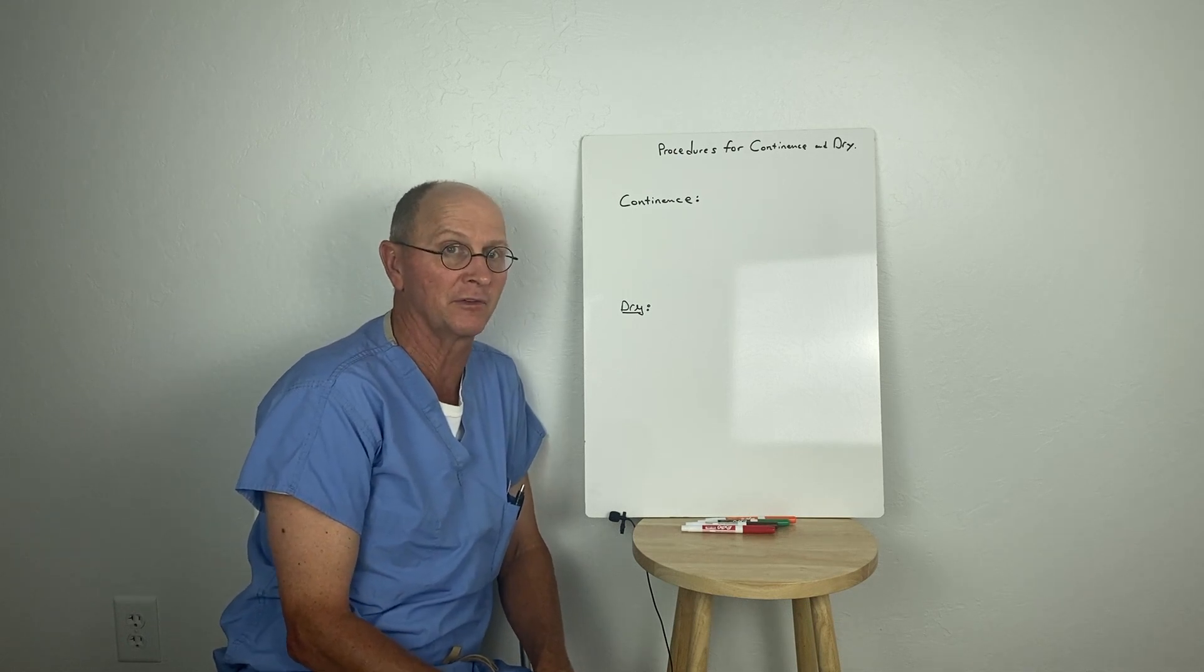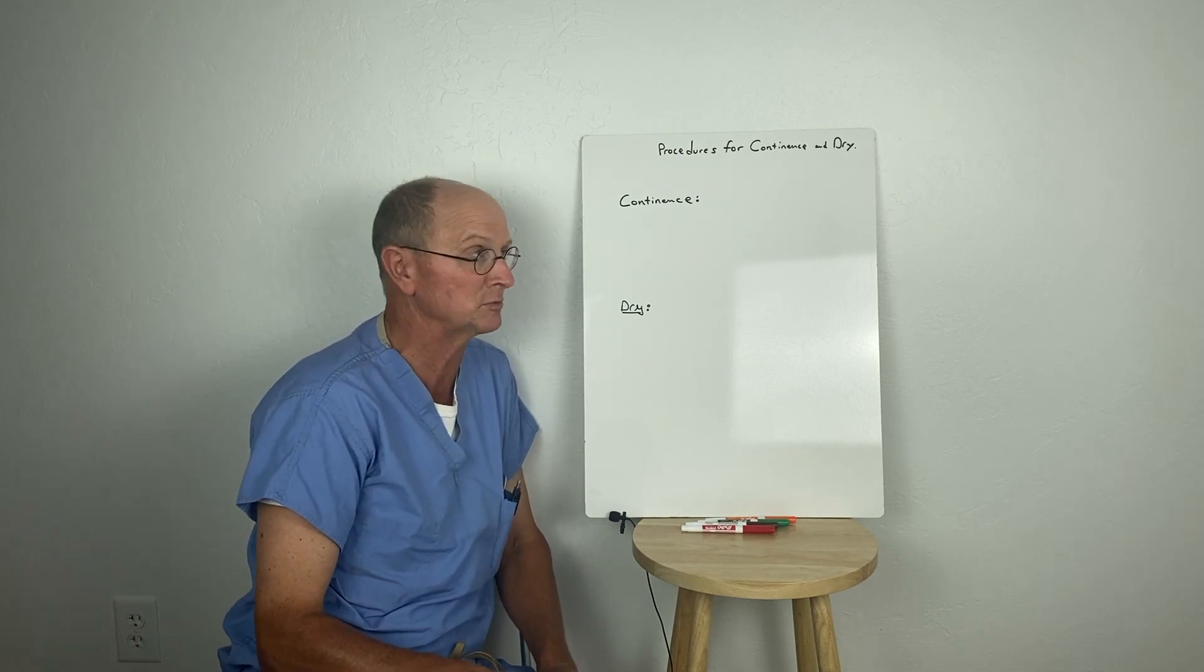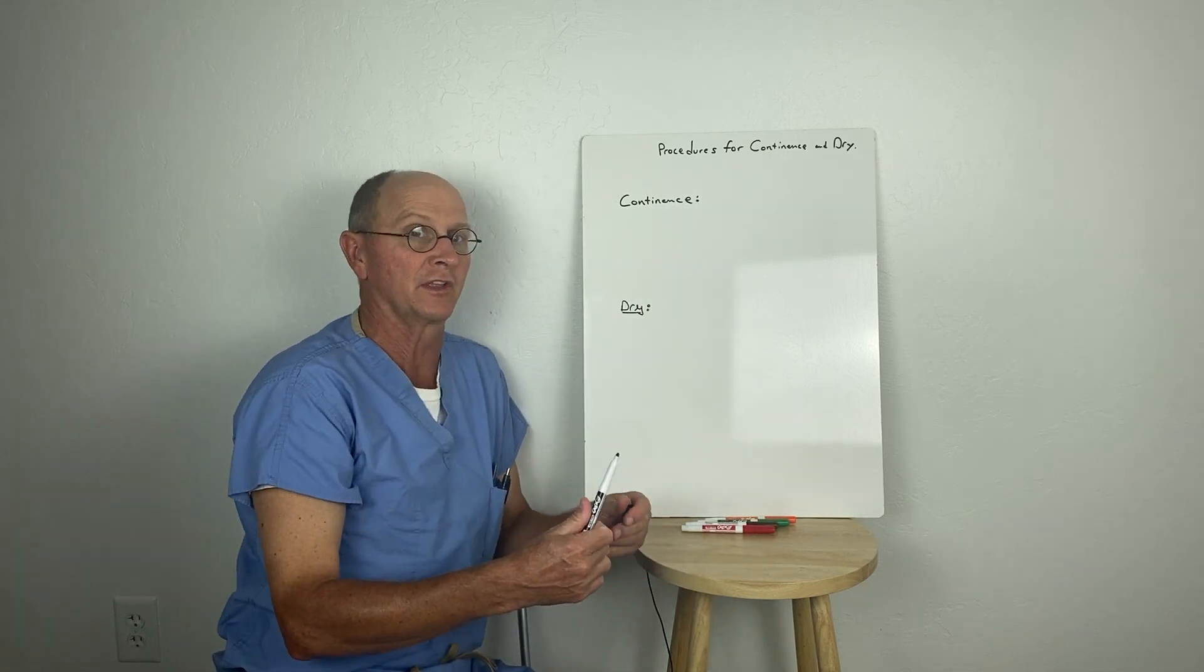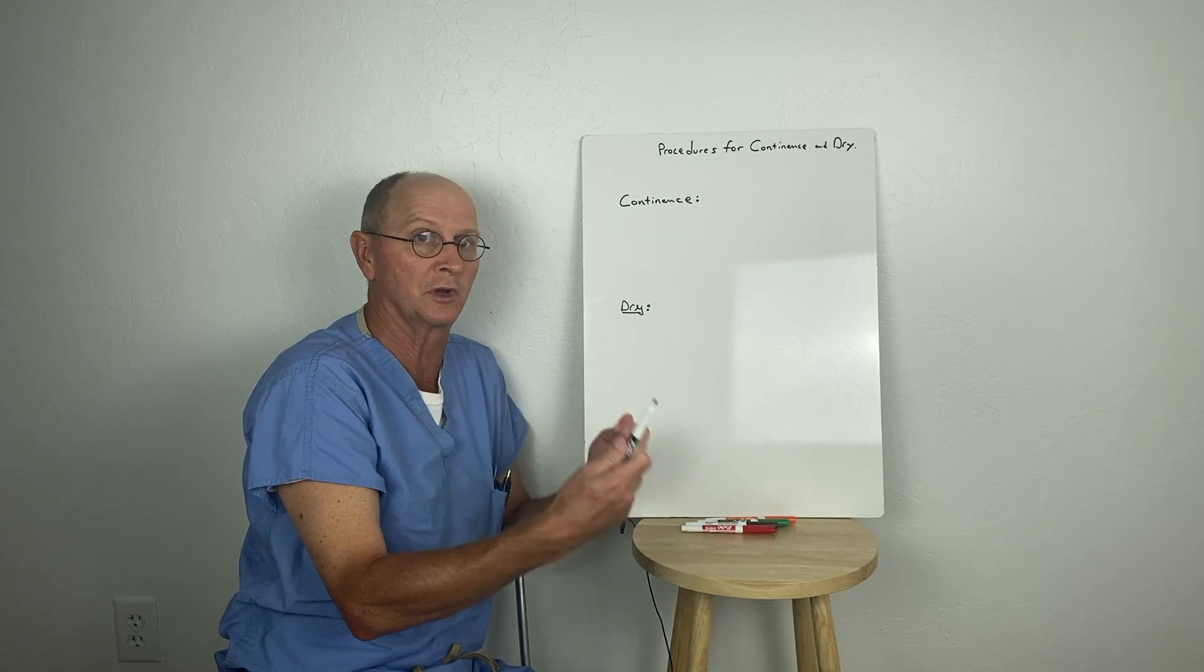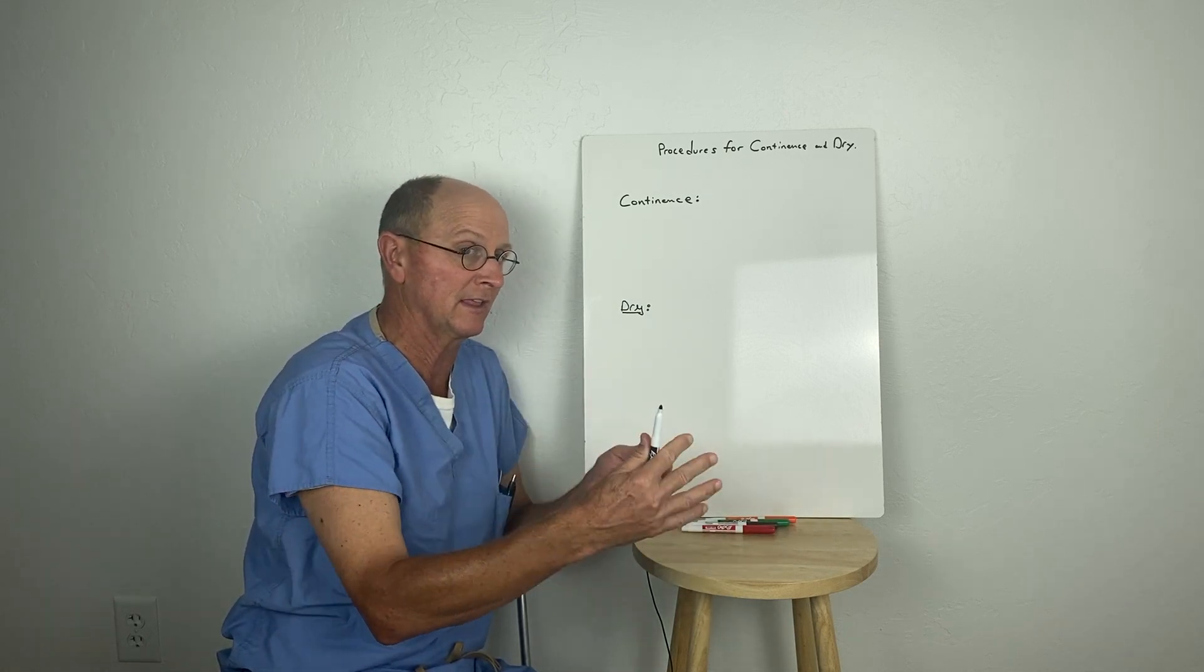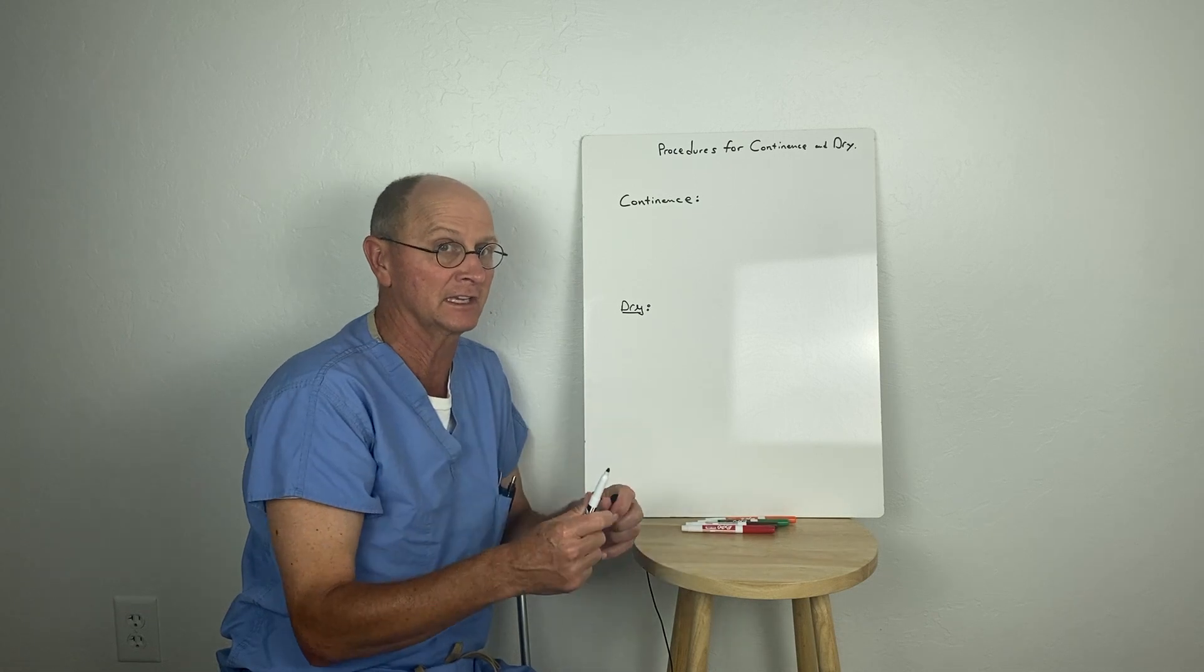Remember we did a previous video discussing the difference between continence and dryness. Continence is volitional voiding—the bladder generates pressures and people void spontaneously. They can control it and they don't need any diapers.